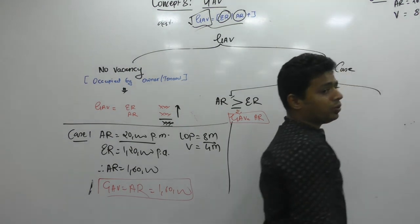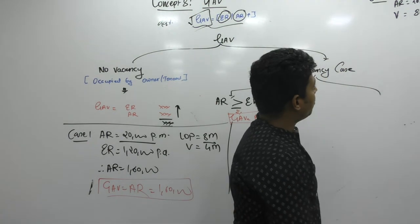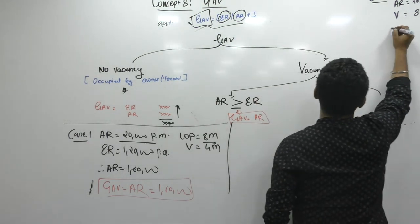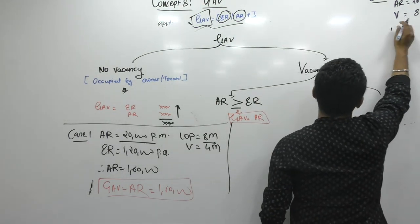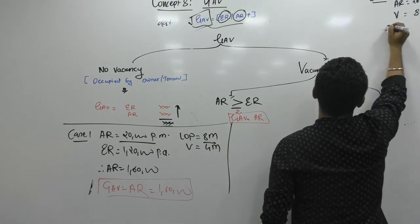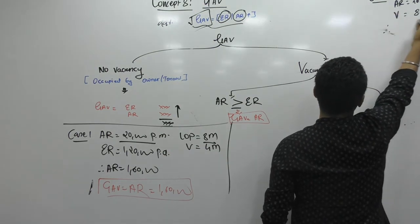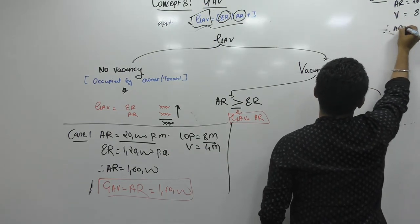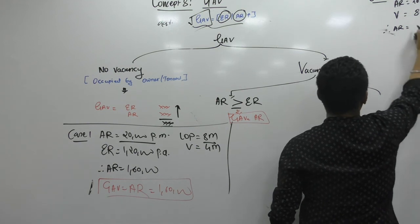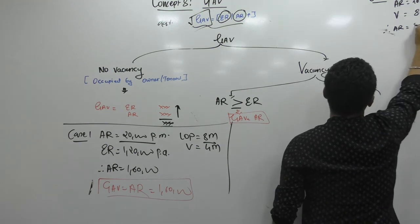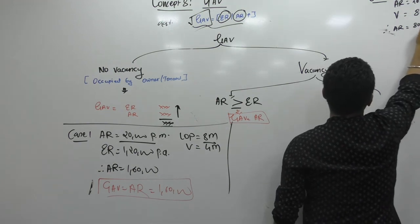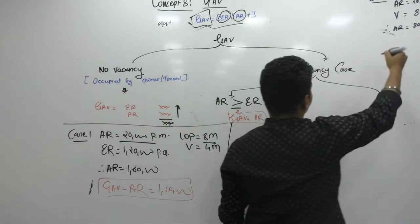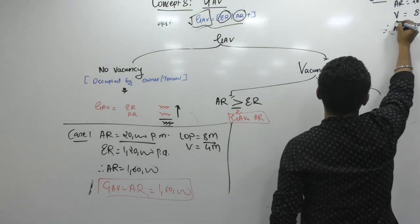Vacancy period is equal to 8 months. Now what will be my actual rent? Vacancy period is 8 months, so actual rent per annum covers only 4 months. So that is 80,000 only. And if I compare this with the expected rent — what is my expected rent? 1 lakh 20,000.